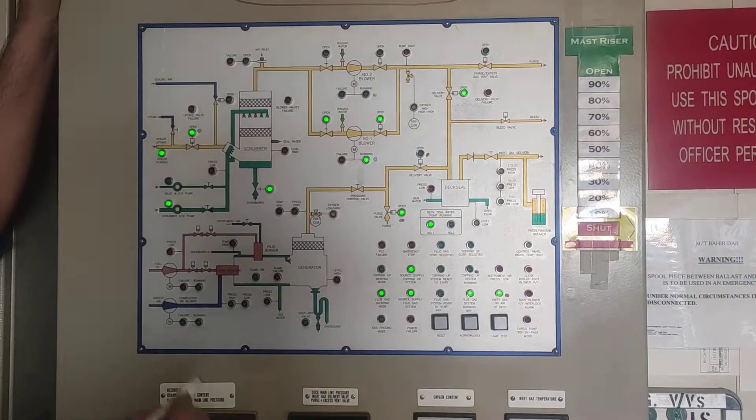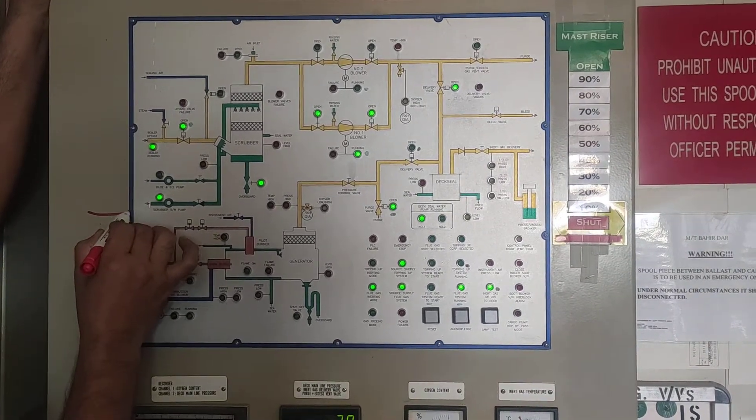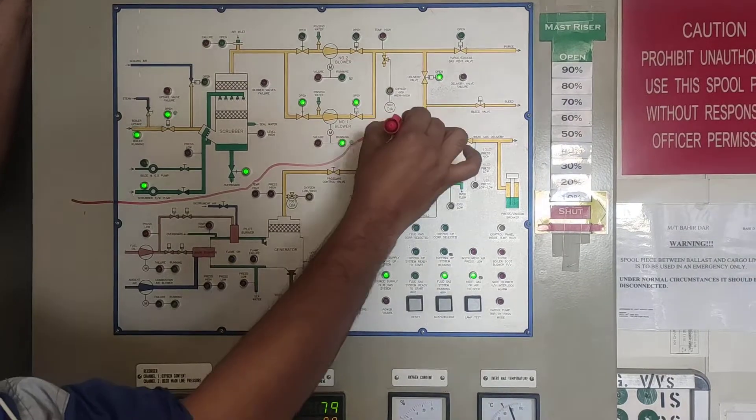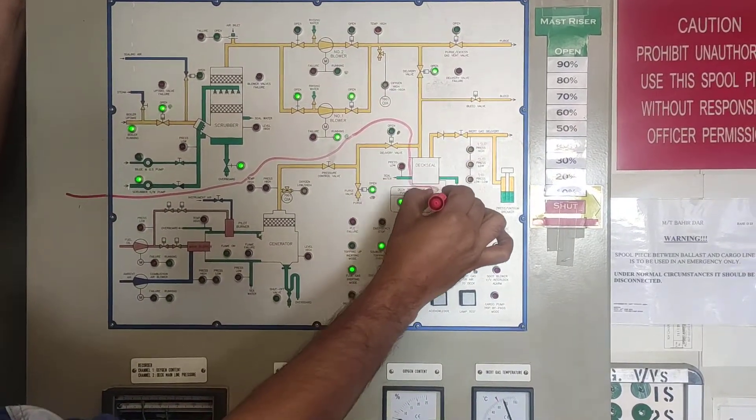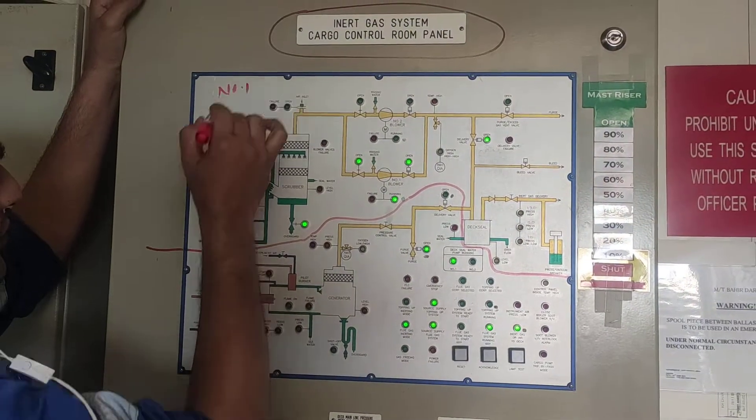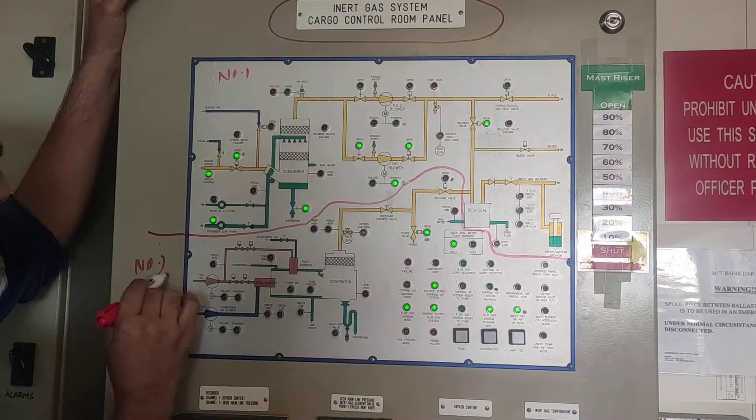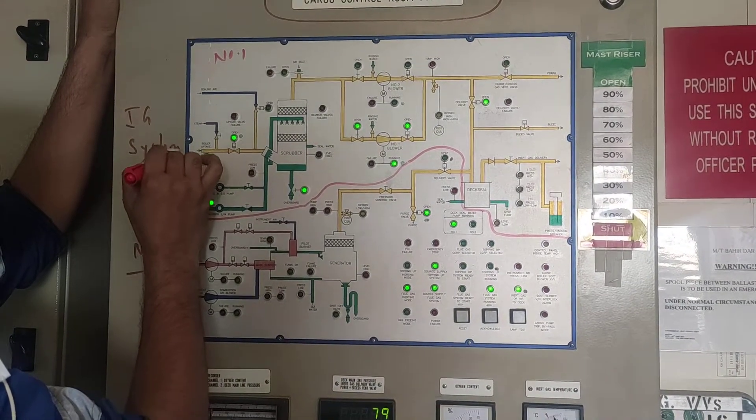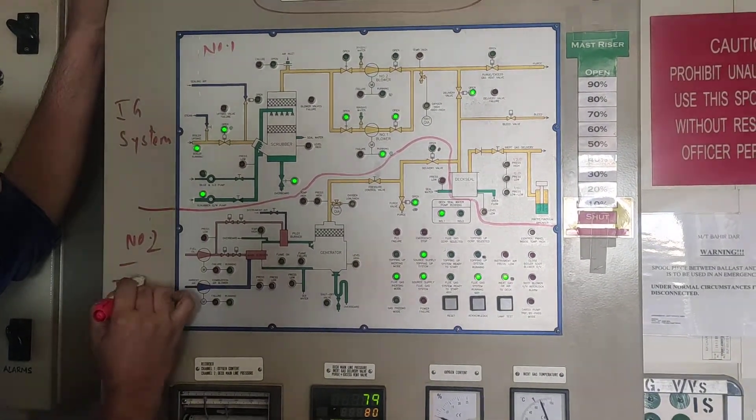For inert gas system we have two systems here. I will draw a line to separate the two systems. One is this system, number one and this is number two. This system is the main inert gas system and this is the inert gas generator IGG.